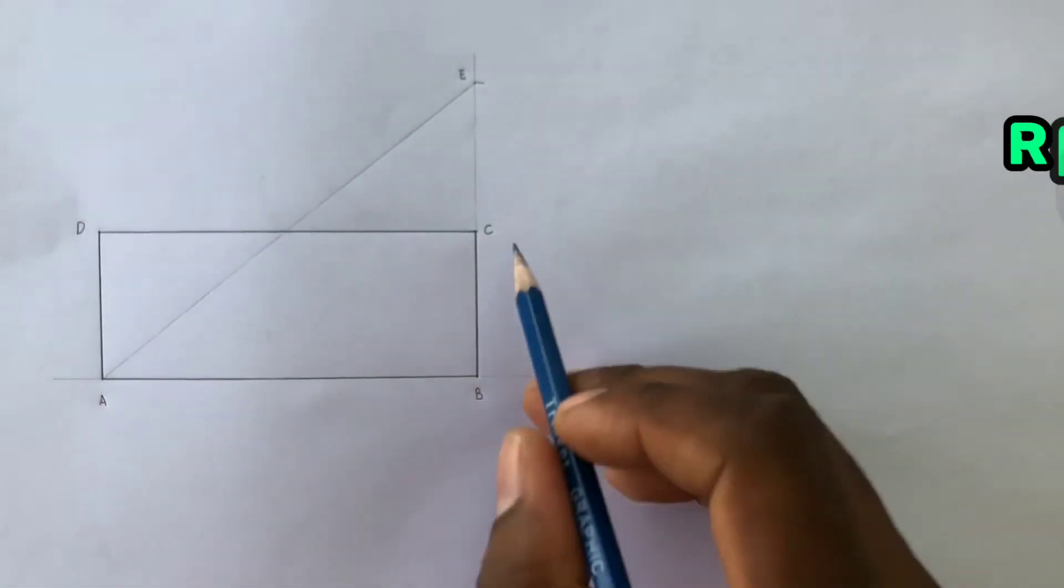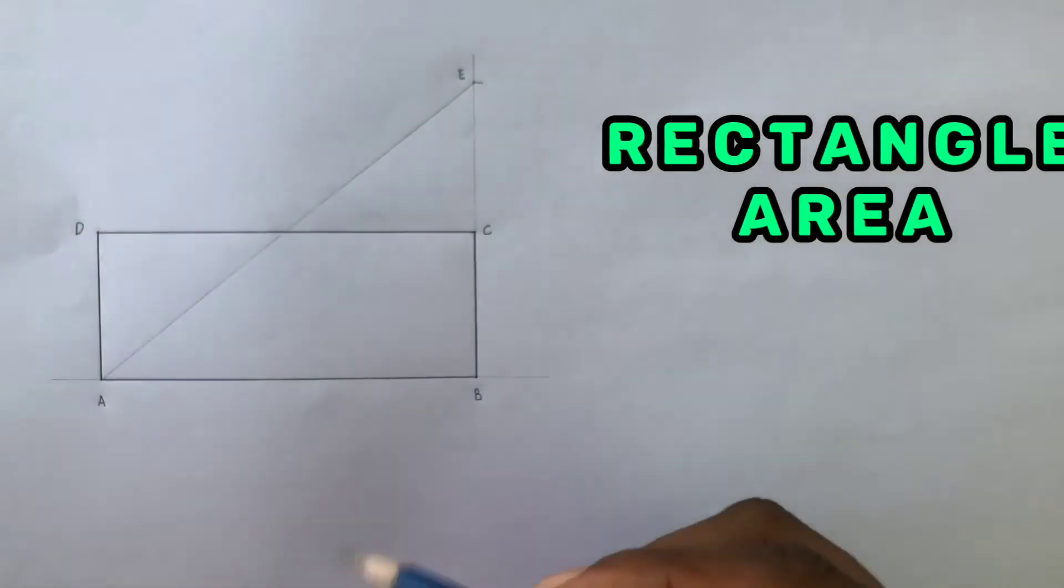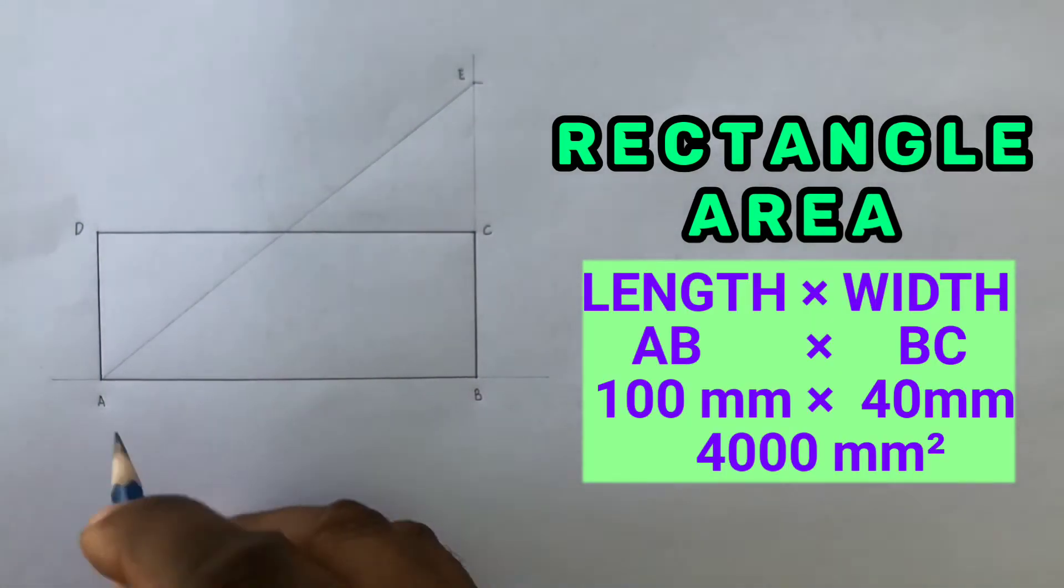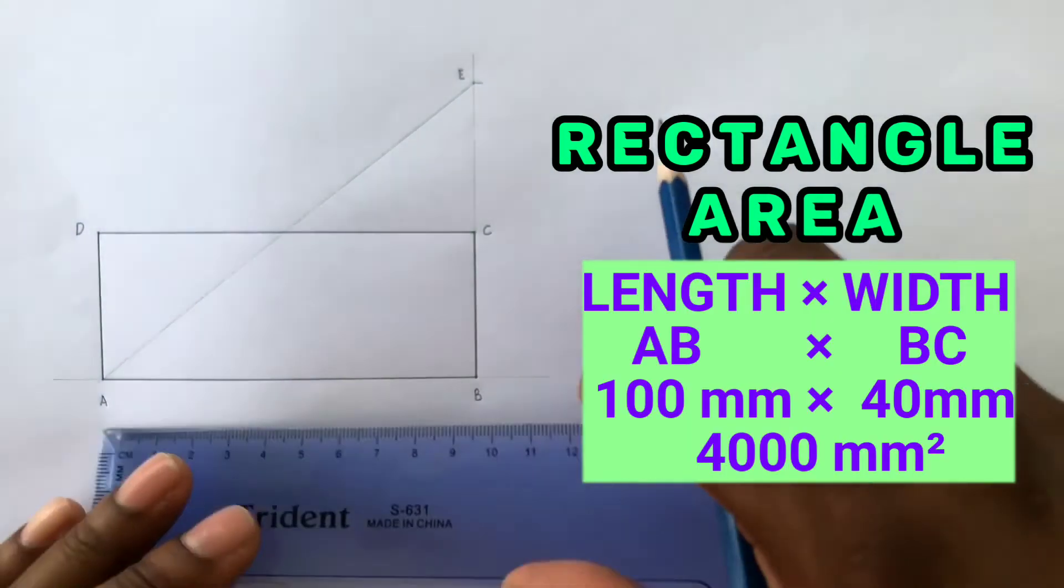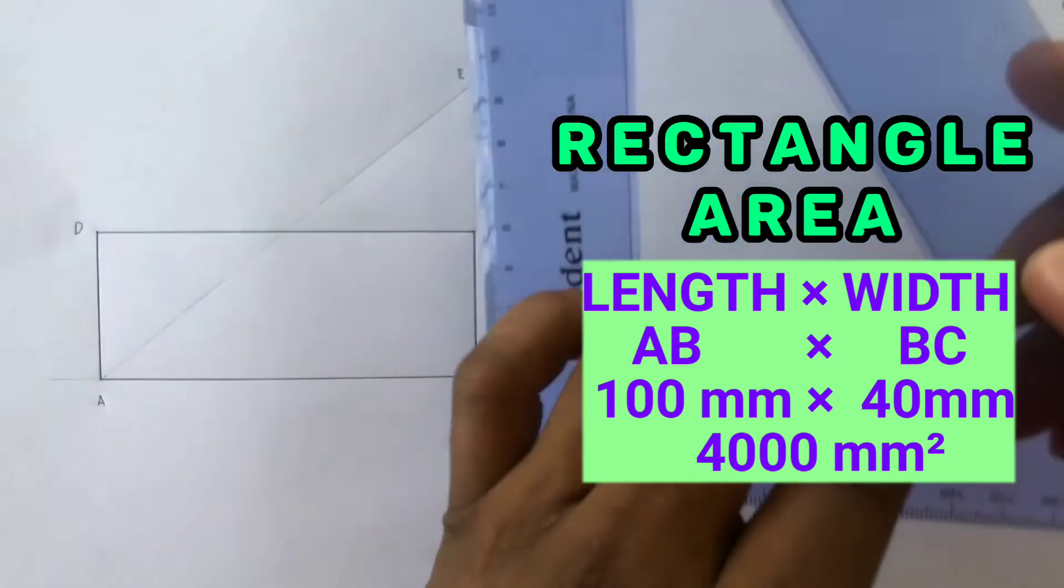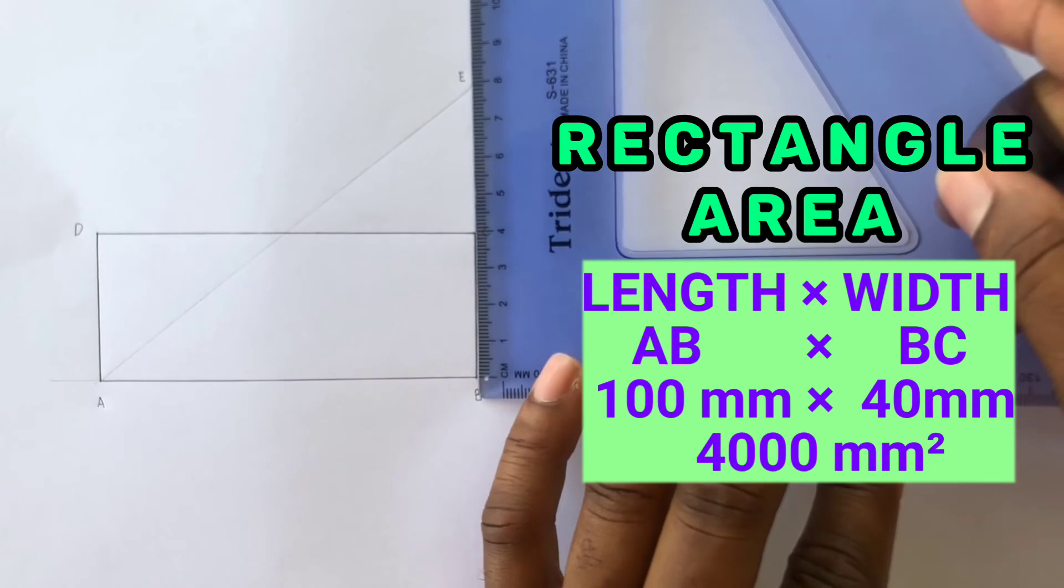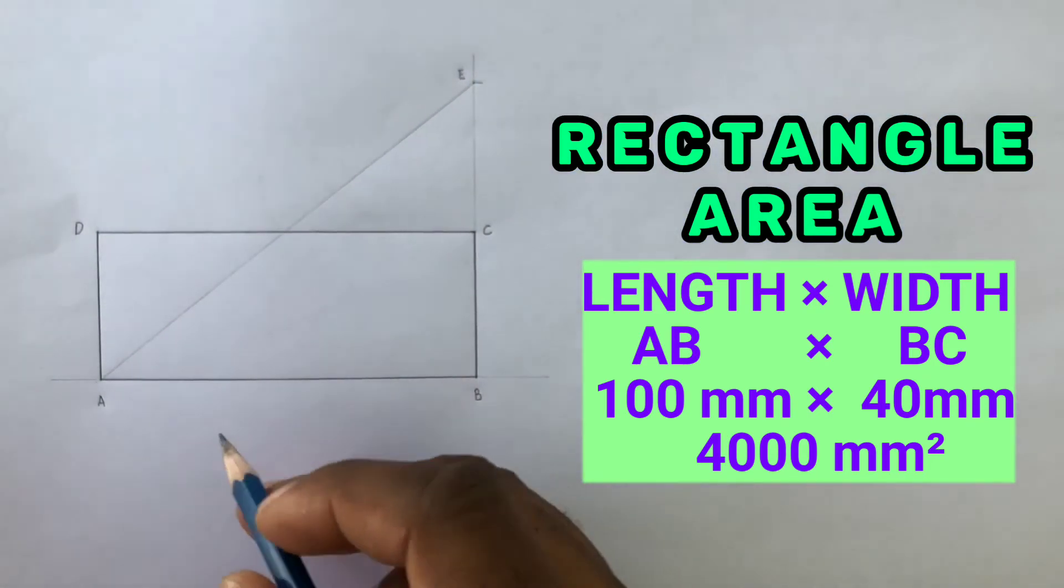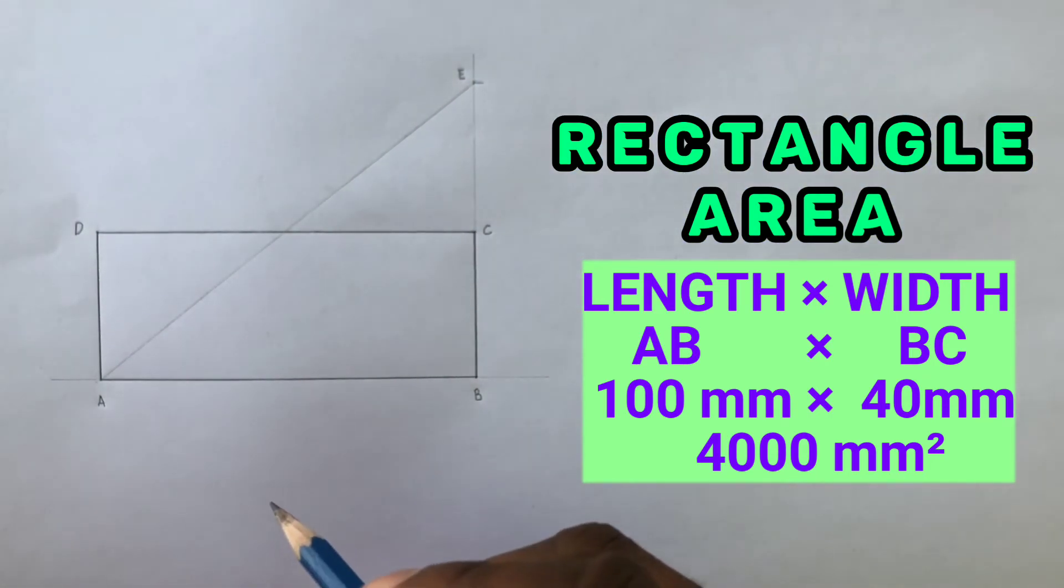Now in order for you to calculate the area of this rectangle, you can multiply the length AB, which measures 100 millimeters, by the width BC, measuring 40 millimeters. Hence the calculated area of this rectangle is 4000 millimeters squared.